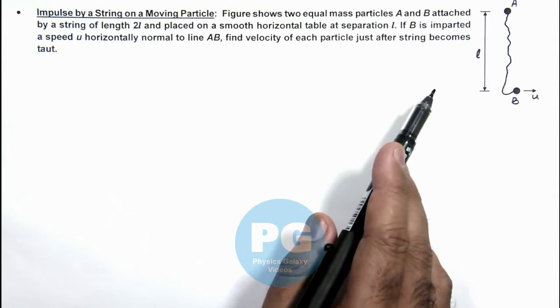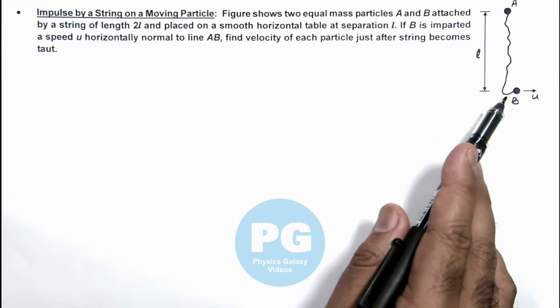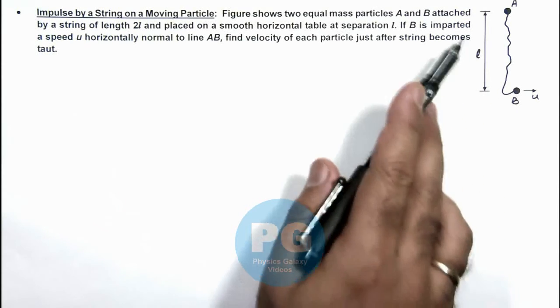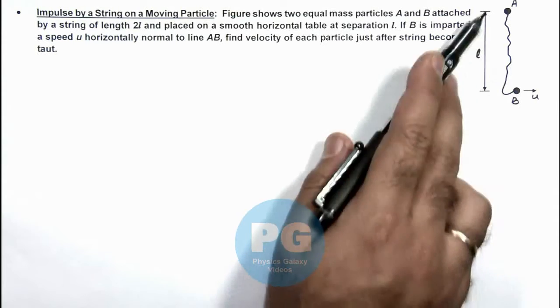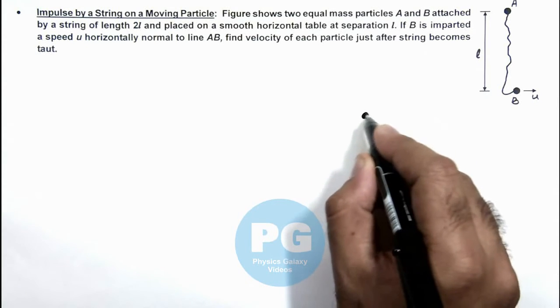So in this situation here we can see when the particle B moves, string becomes tight when the length of this line AB will be 2l. This would be the situation if this is the particle A.